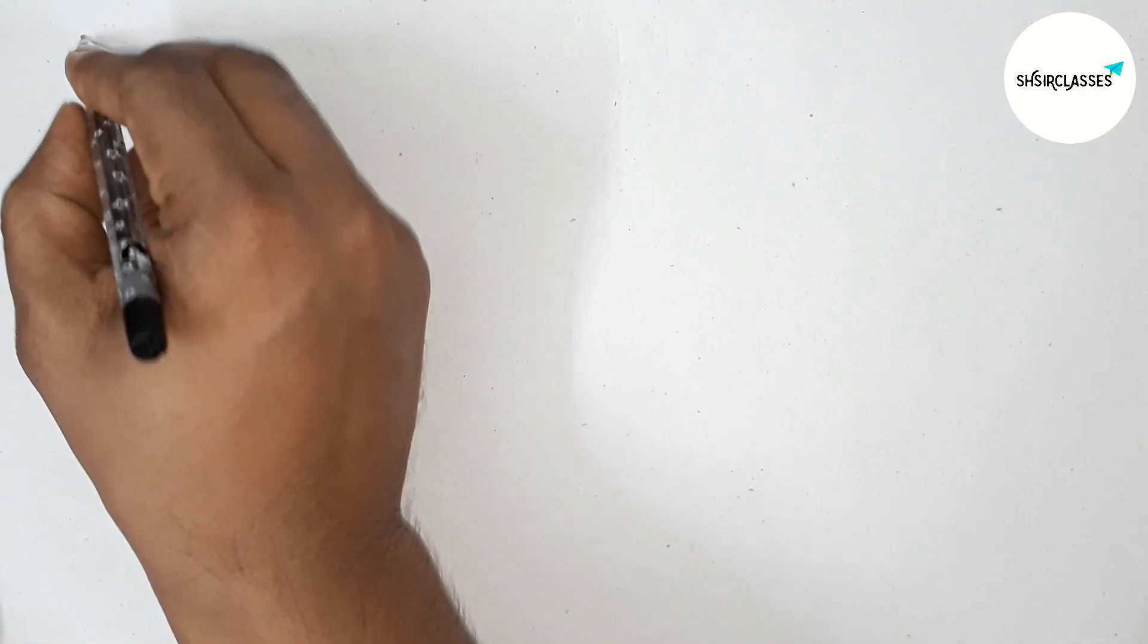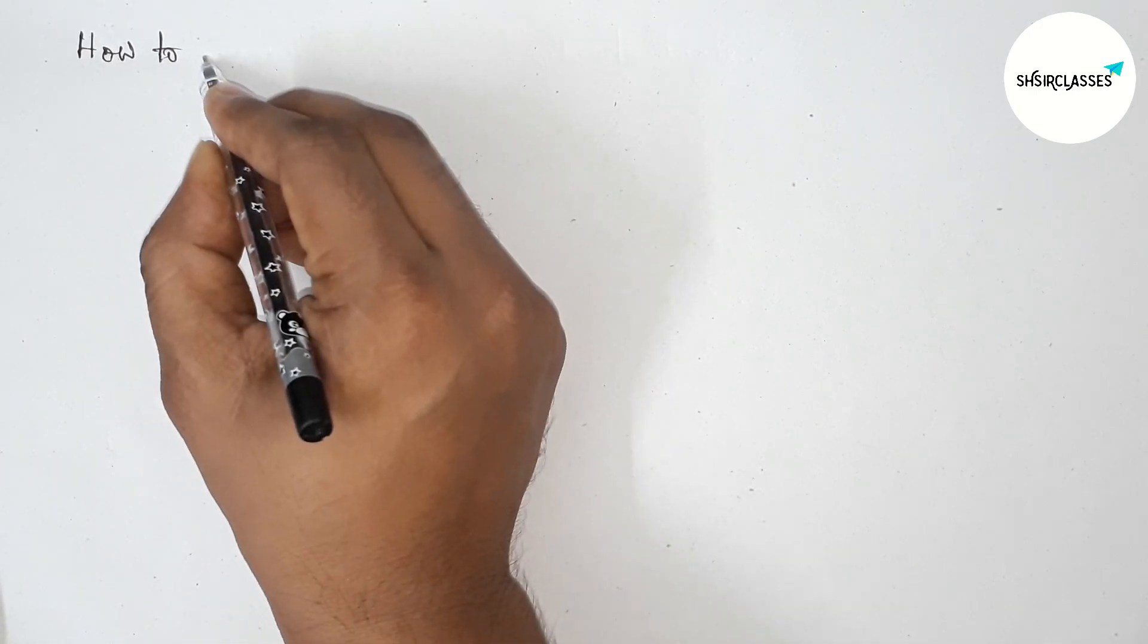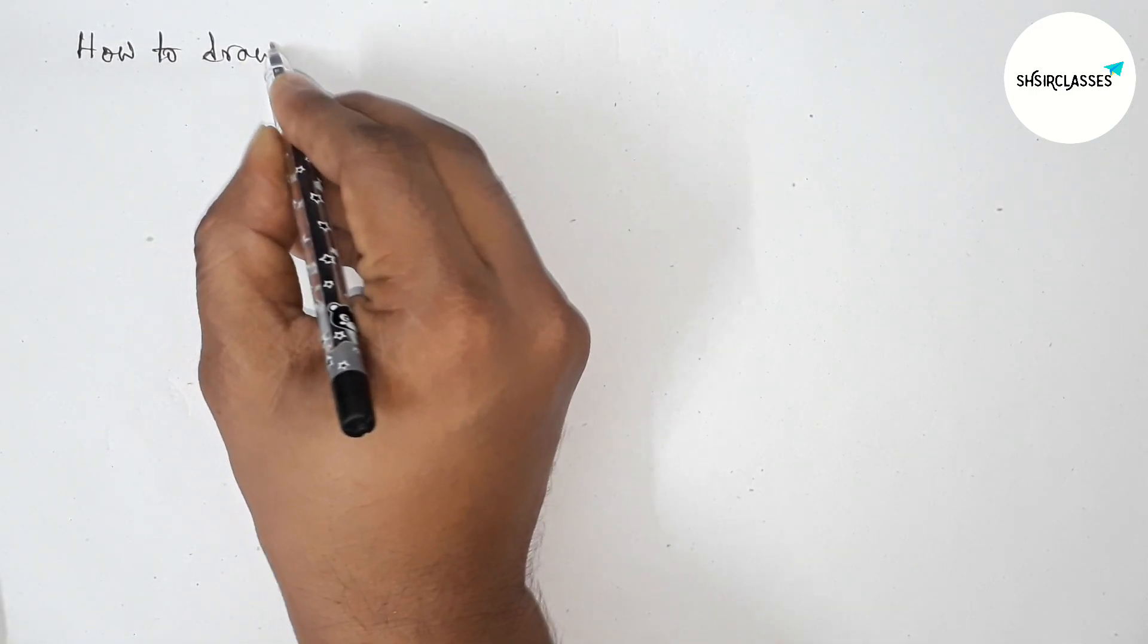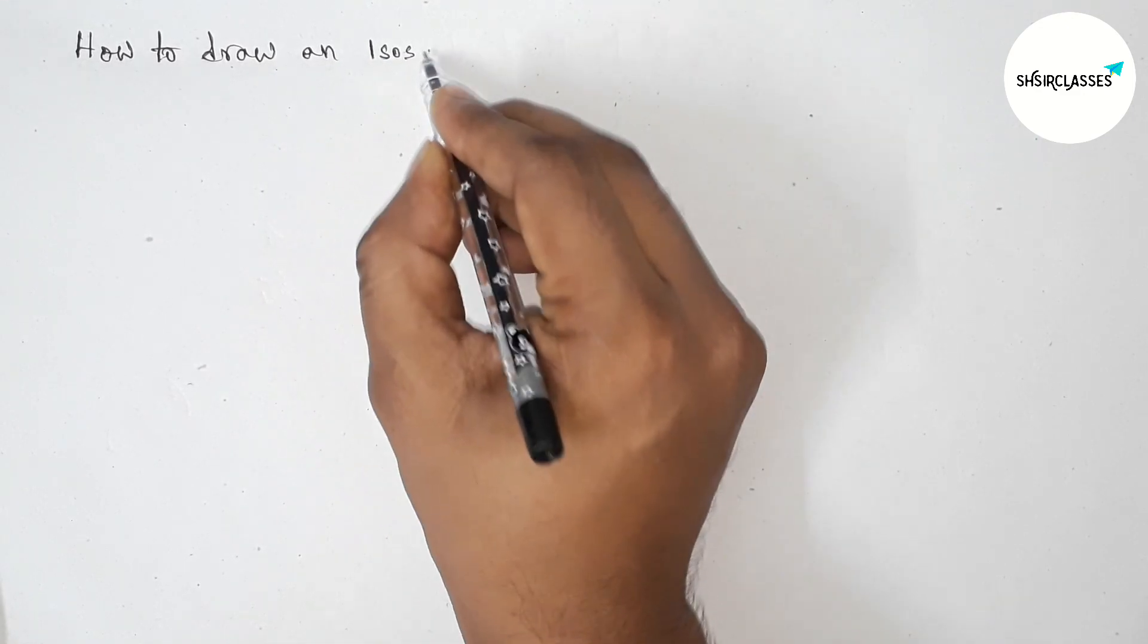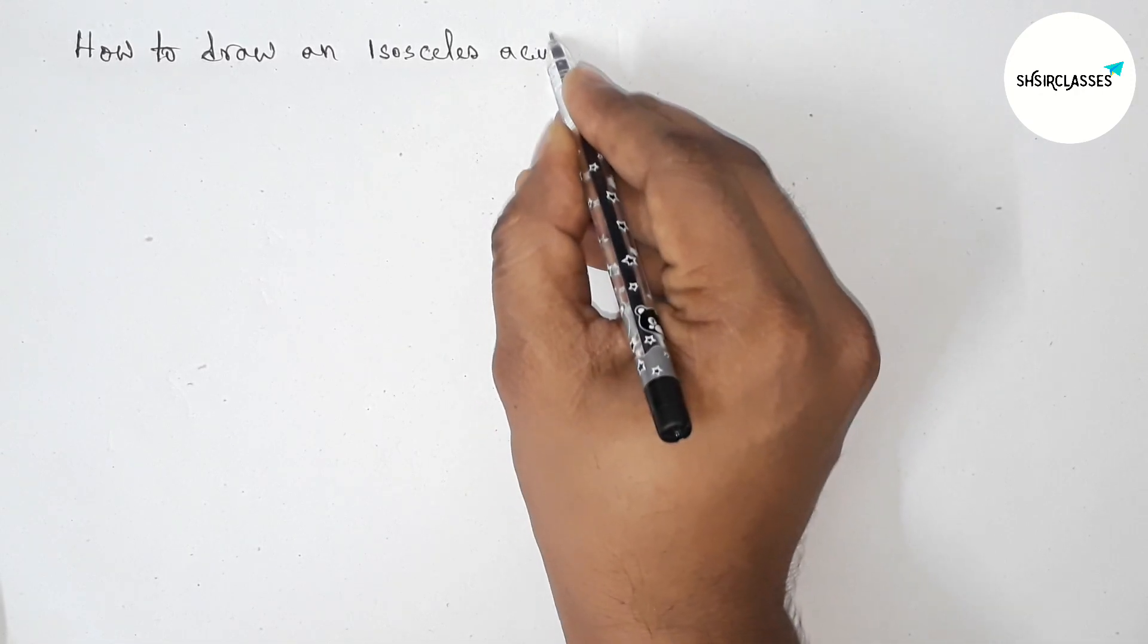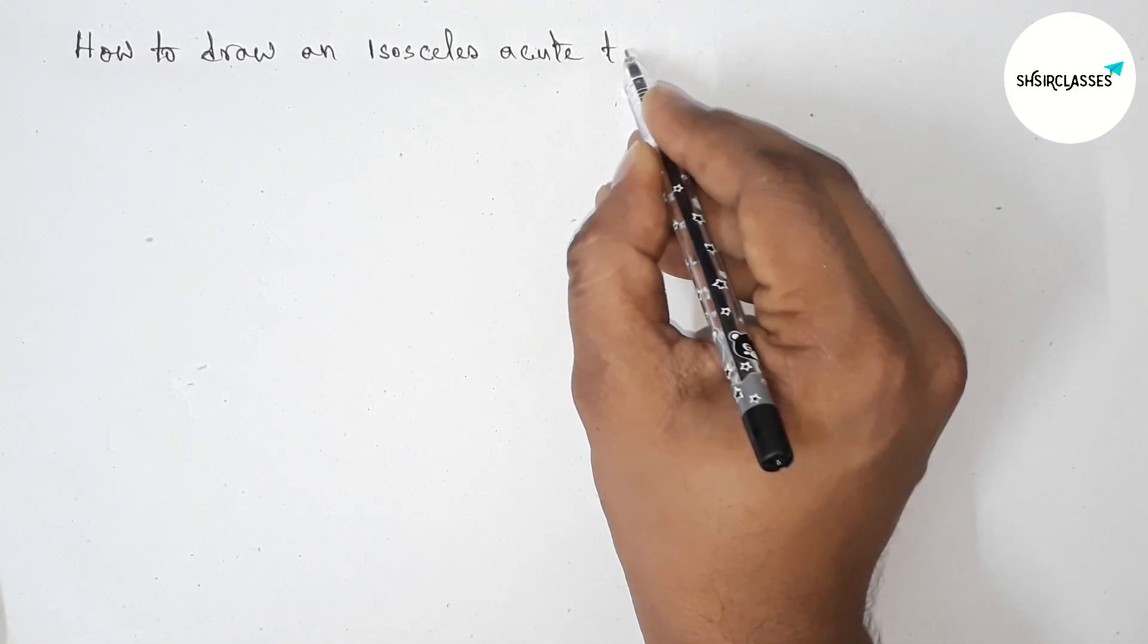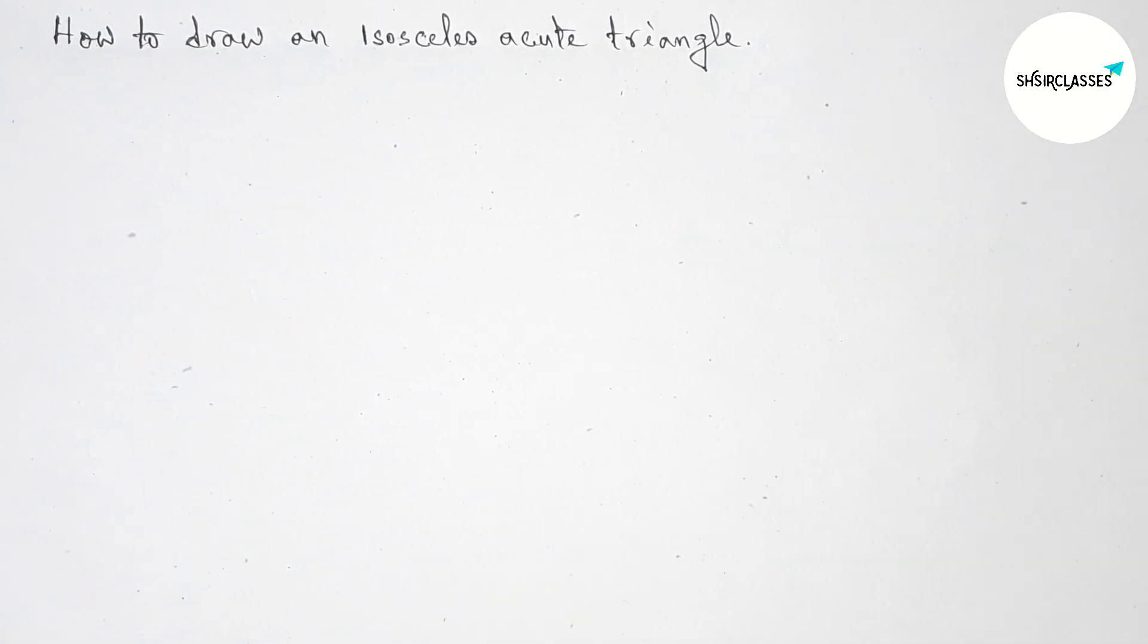Hi everyone, welcome to SI share classes. Today in this video, we'll be drawing an important geometrical construction: how to draw an isosceles acute angle triangle in an easy way. Please watch the video till the end, so let's start.